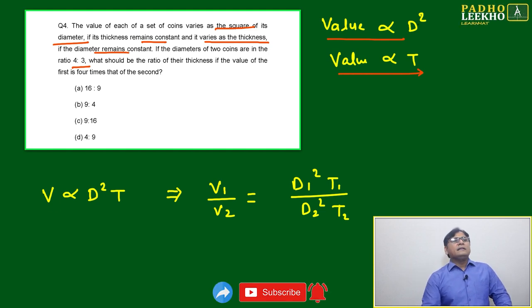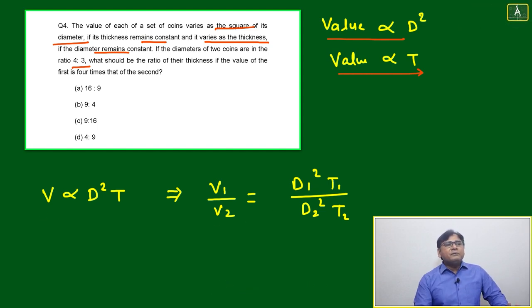We can combine these two equations. We can write V is directly proportional to D² times T. Then V₁/V₂ we can write as D₁² T₁ divided by D₂² T₂.